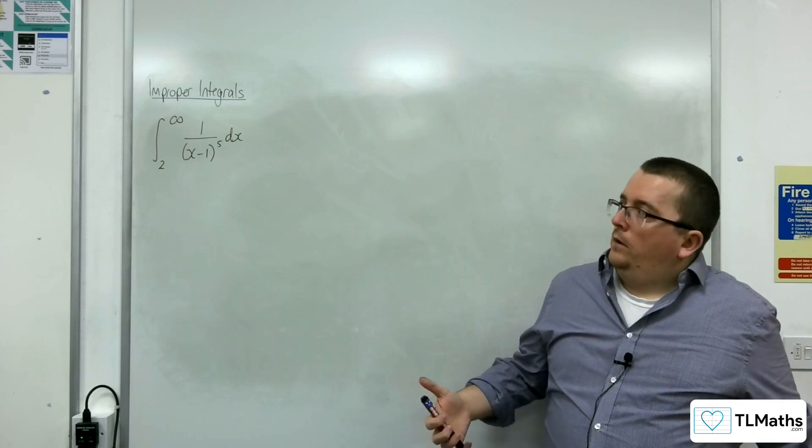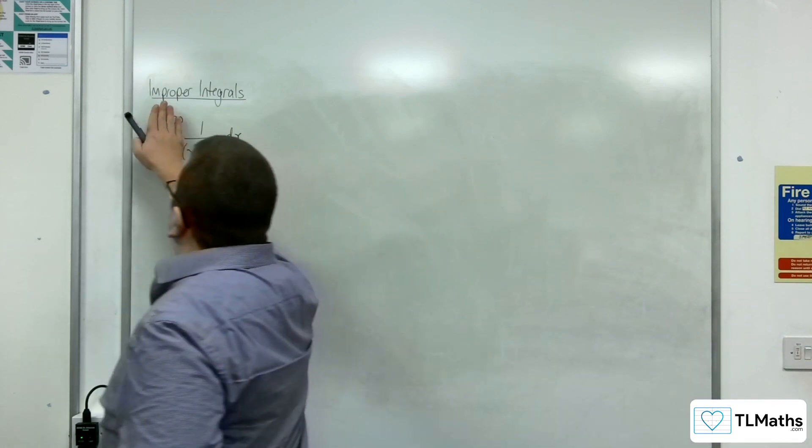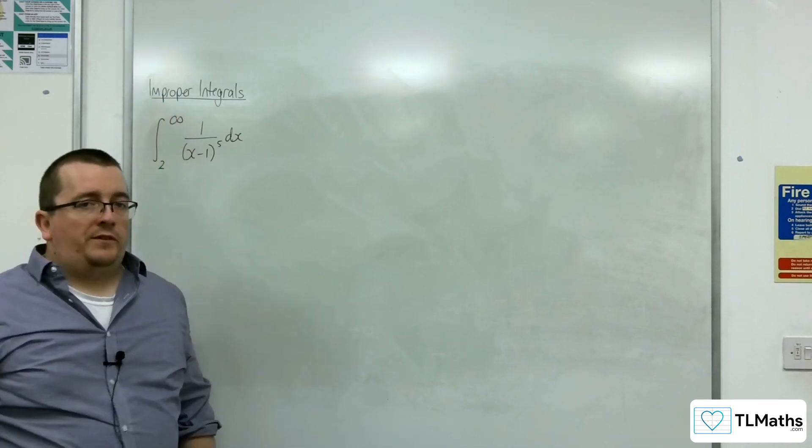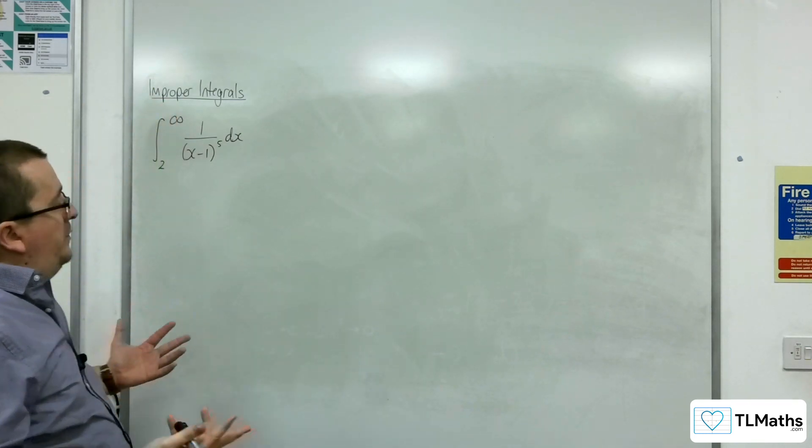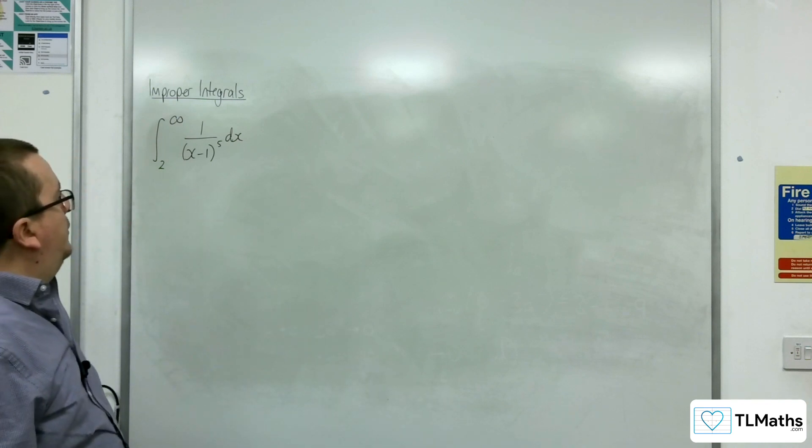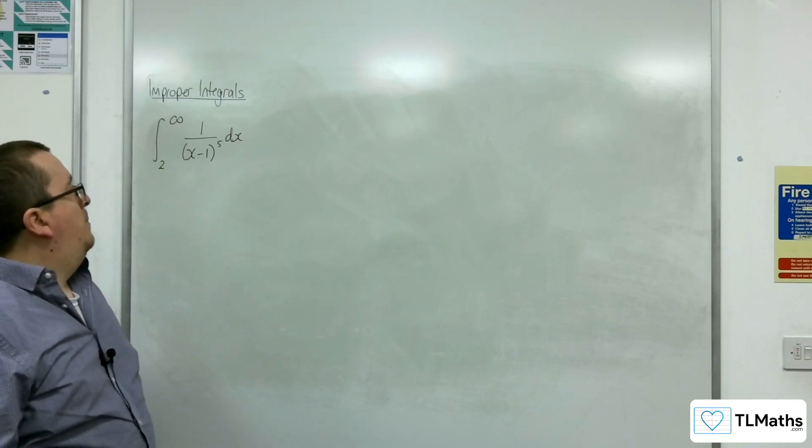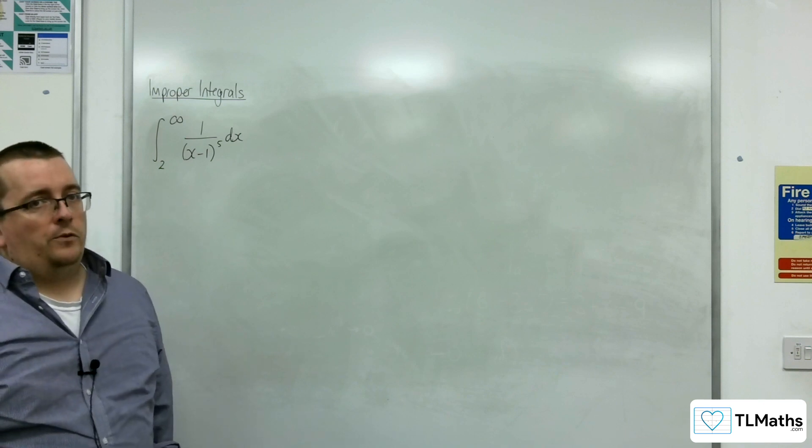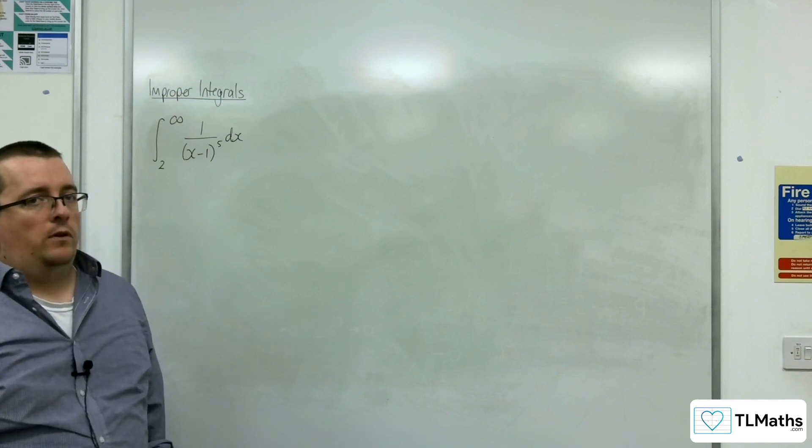So if we were just looking at that function to integrate 1 over (x minus 1) to the 5, you could use integration by substitution, just let u be equal to x minus 1. But you probably want to be able to reverse the chain rule on this.